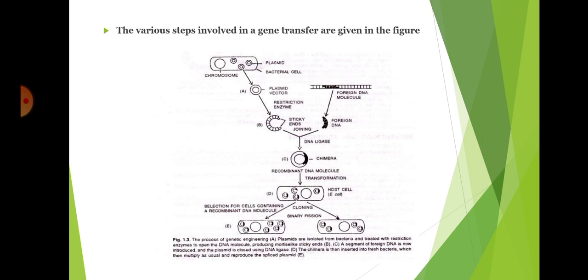Agrobacterium tumefaciens is a powerful tool for genetic engineering of dicots. The tumor-promoting genes on the T-DNA can be removed and replaced by foreign genes. Infection of a plant with Agrobacterium containing these engineered plasmids will result in transfer of the foreign genes into the plant's genome. Transgenic plants obtained through this method will transmit the foreign genes to their progeny in a Mendelian fashion. Considerable progress has been made in transferring agriculturally useful genes, including genes for resistance to insects, herbicides, and viruses.